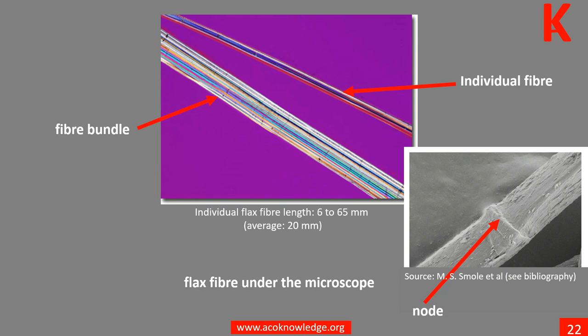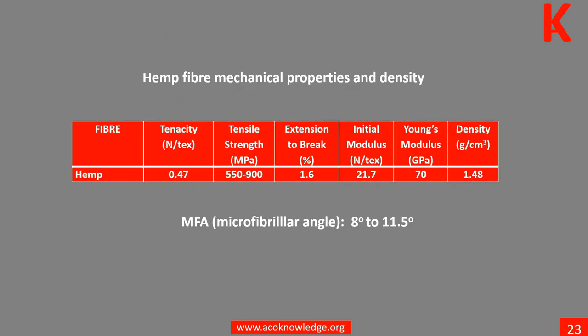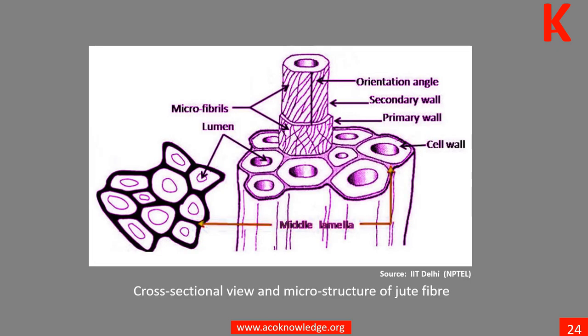In flax, the length of individual fibers varies between 6 to 65 millimeters, but on average they are about 20 millimeters long. Learn more in Unit 9. This table shows typical values of some mechanical properties and density of hemp fibers. Learn more in Unit 10.